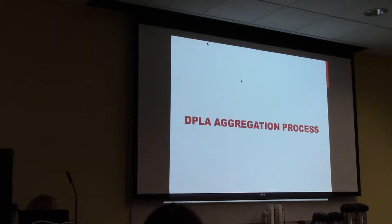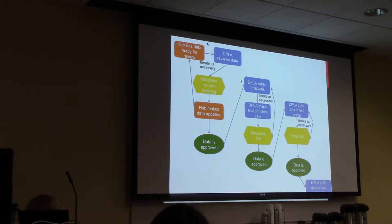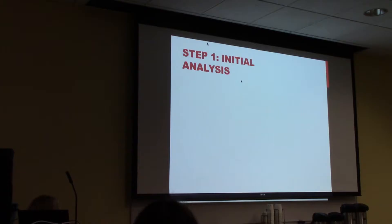The big thing we want to talk about today is the aggregation process. This is an overall high-level diagram — we'll go through it piece by piece. It's an iterative process with three major stages. On this flowchart, the steps in orange are steps you're working on on your own; steps in blue are steps DPLA is working on; steps in yellow are parts we work on together — the reviews, QA, and things like that. And the green dots are our milestones for the process.